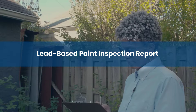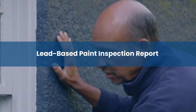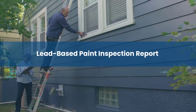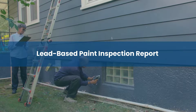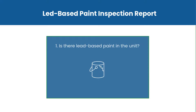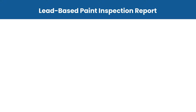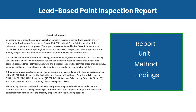The first report we'll review in detail is the Lead-Based Paint Inspection Report. It is completed by the Certified Lead Inspector or Risk Assessor and answers two main questions: Is there lead-based paint in the unit? And if lead-based paint is present, where is it located? The report should include the following sections: an Executive Summary to summarize the report, unit, method, and findings.